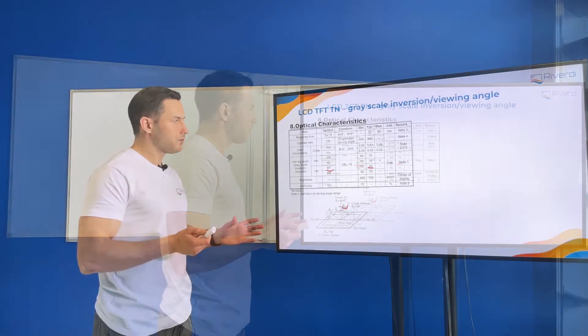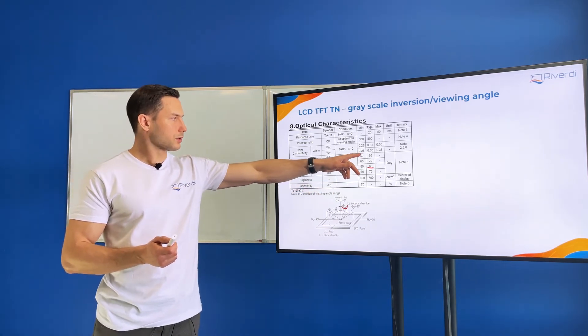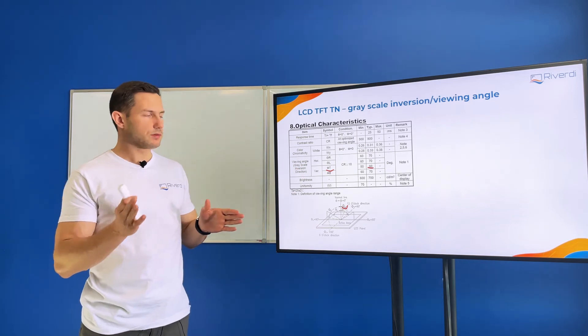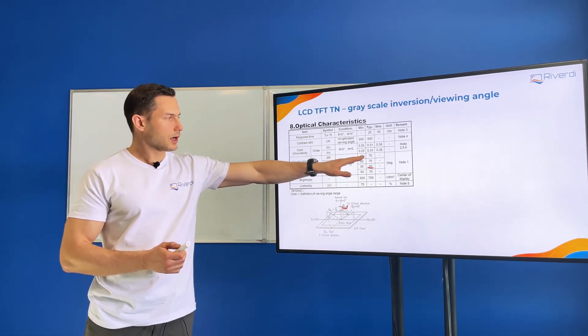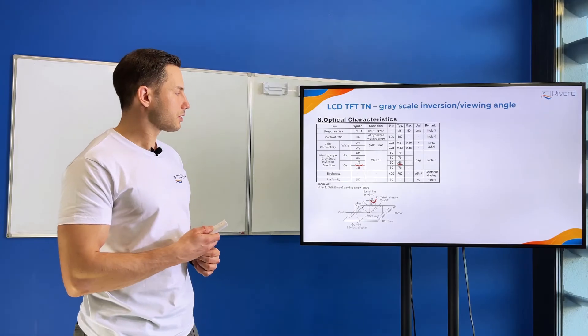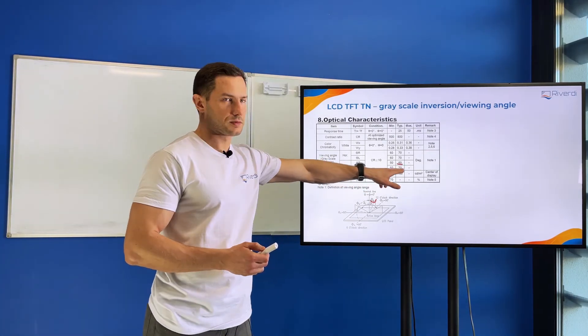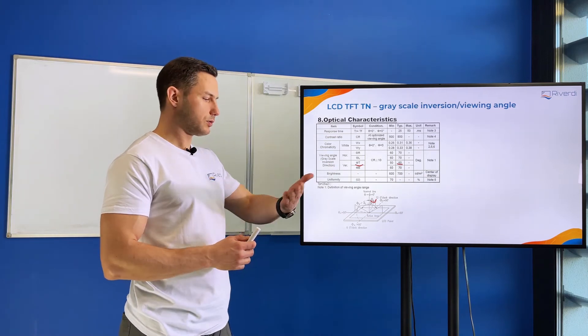Normally we may think that 70 degrees is better, so we would choose the left and right sides to be 70 degrees. If we don't know about the grayscale inversion phenomenon, we may put our user on the bottom side, at the six o'clock position.